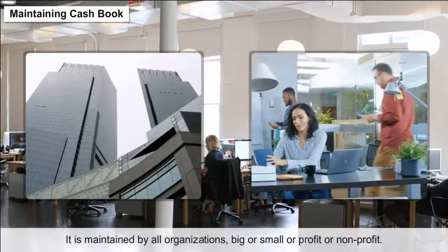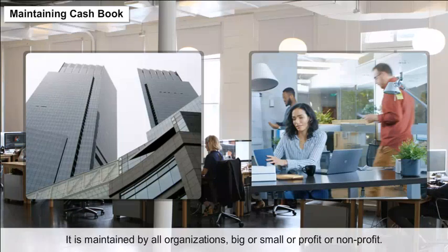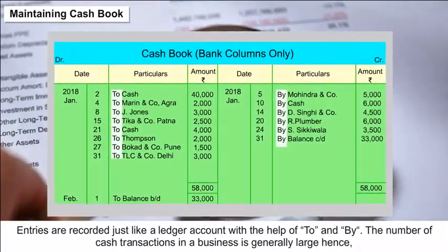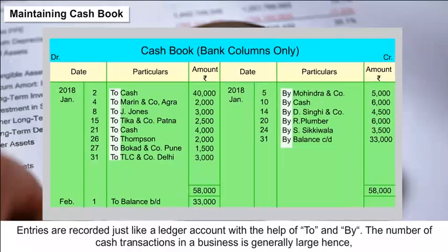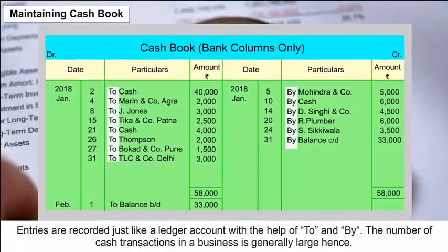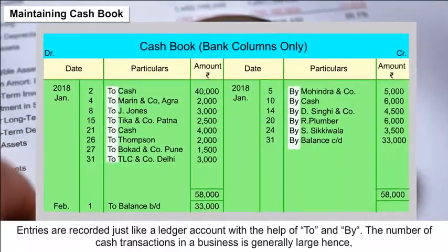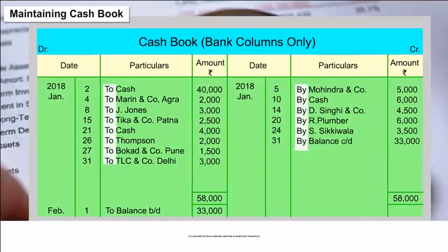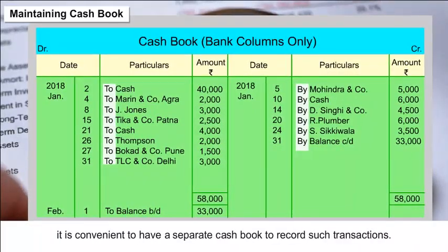The cash book is maintained by all organizations, big or small, profit or non-profit. Entries are recorded just like a ledger account with the help of 'to' and 'by'. The number of cash transactions in a business is generally large, hence it is convenient to have a separate cash book to record such transactions.